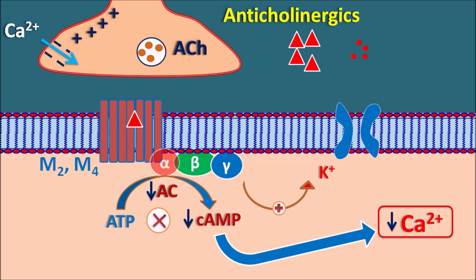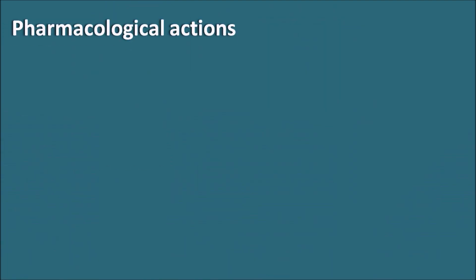Most anticholinergics are non-selective — they can block any type of muscarinic receptor. M1, M3, and M5 are excitatory in nature, and M2 and M4 are inhibitory in nature. So anticholinergics can inhibit the excitatory response mediated by M1, M3, M5 and prevent the inhibitory response produced by M2 and M4.